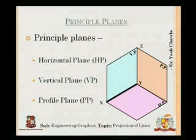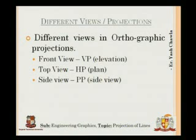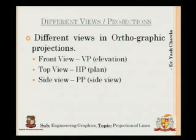A brief reminder: HP is the horizontal plane, VP is the vertical plane, and PP is the profile plane, as demonstrated using a thermocol model. There will be three views that we will be drawing: one is the front view, which is the vertical projection or elevation; the top view is on HP, the horizontal plane, known as the plan; and the side view is always on the profile plane.